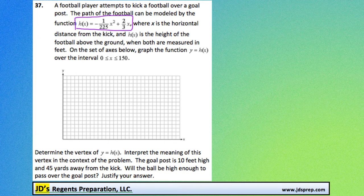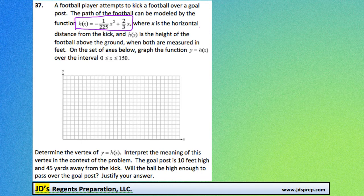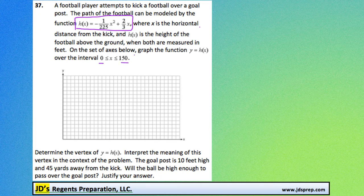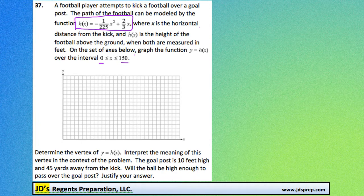It states that x is the horizontal distance from the kick, and h is the height of the football above the ground, both measured in feet. And it says on the set of axes below, graph the function over the interval from 0 to 150. We're going to type this equation into our calculator to help us graph it.